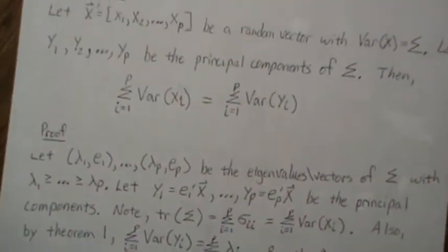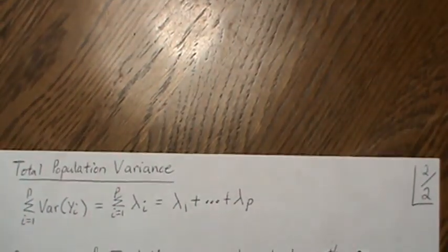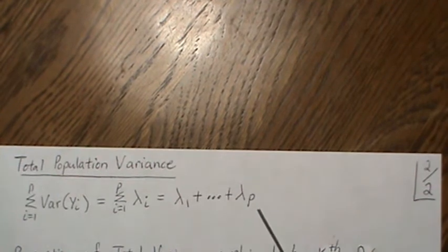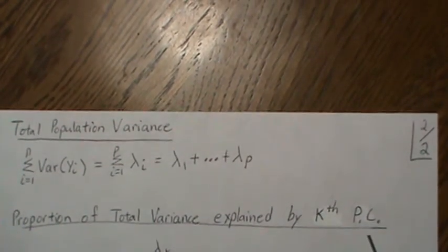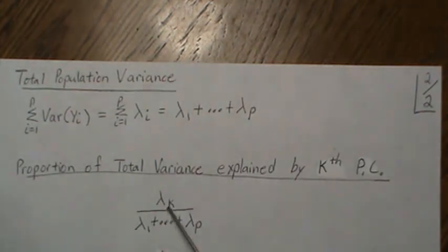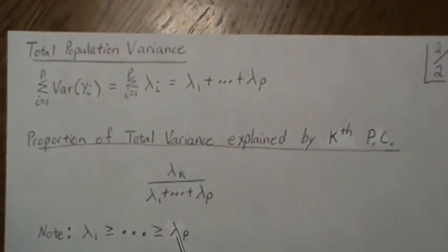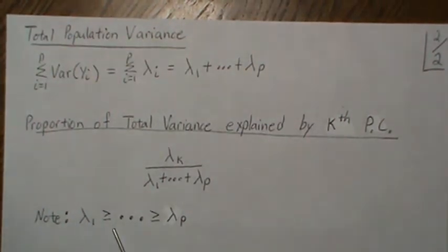We call that the total population variance. The sum of the variances of the yi's equals the sum of the lambdas — lambda 1 through lambda p. To find the proportion of total variance explained by the k-th principal component, it's simply lambda k divided by the sum of all lambdas. Since the lambdas are ordered, lambda 1 contributes the most variance, lambda 2 the second most, all the way down to lambda p, which is the smallest.